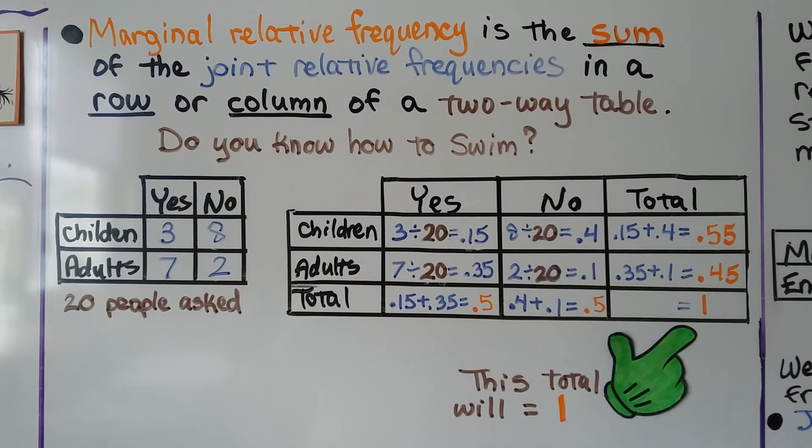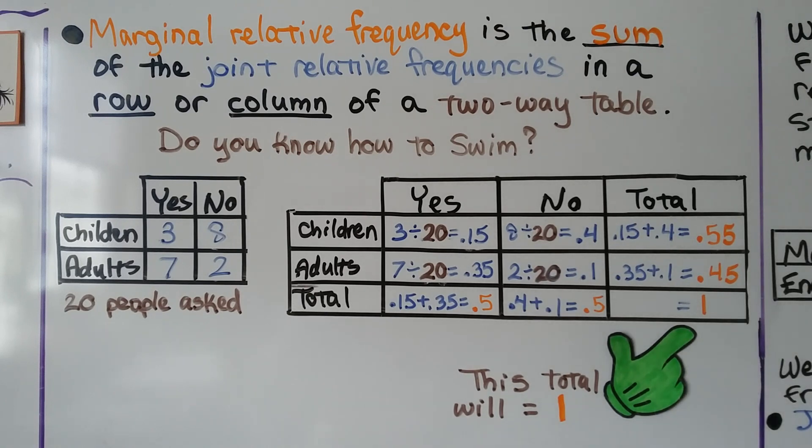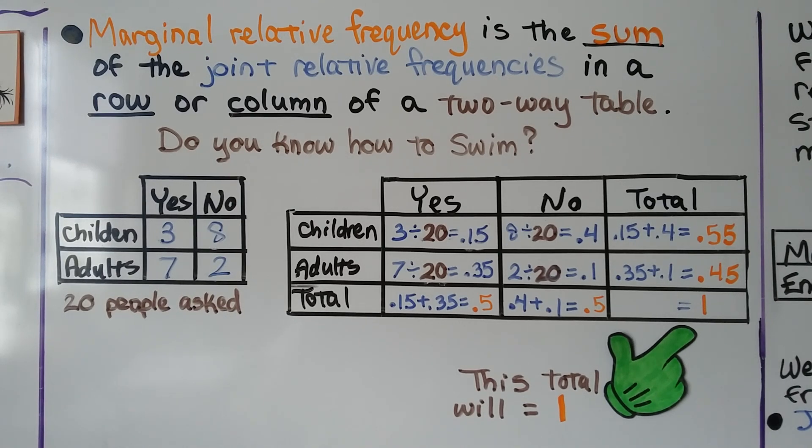Marginal relative frequency is the sum of the joint relative frequencies in a row or a column of a two-way table. So do you know how to swim? 20 people were asked.